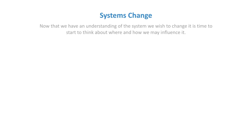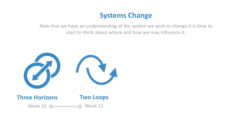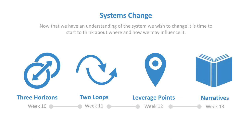In the third section it's all about systems change — how to intervene, how to influence the system, and how to work with transition processes. We look at the three horizons model and futures horizon scanning, then the two loops model from the Berkana Institute for working with transition processes. We also cover leverage points — Donella Meadows' points to intervene in a system — and developing narratives for systems change in week 13. That's the third section, all around changing systems and influencing transition processes.